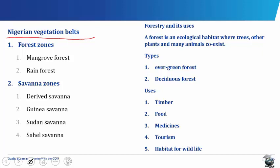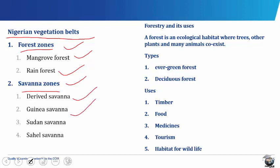The vegetation of Nigeria is divided into two major types: the forest zones and the savannah zones. The forest is divided into the mangrove forest and the rain forest, while savannah zones are divided into the derived savannah, guinea savannah, sudan savannah and the sahel savannah.